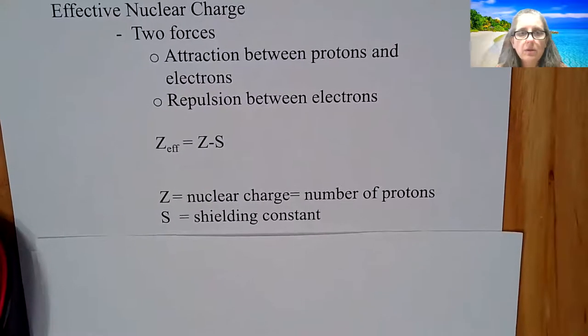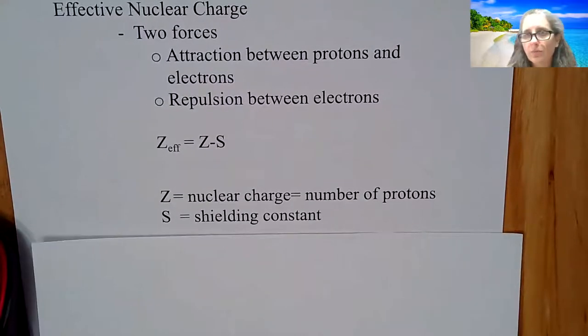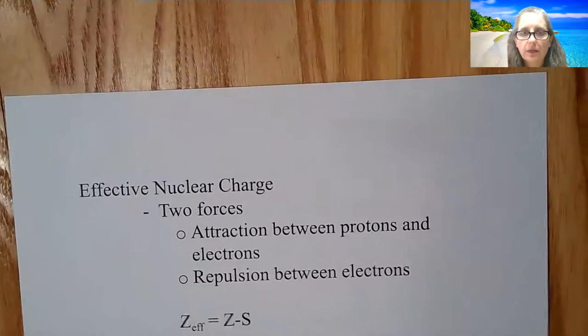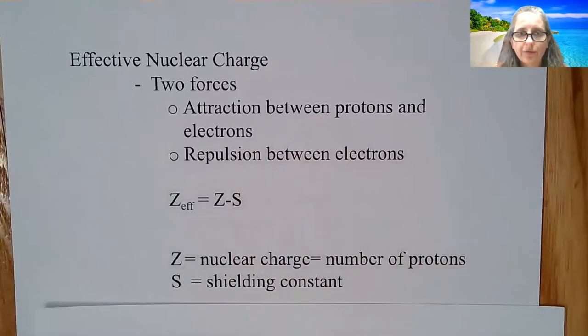So Z is, of course, the nuclear charge or the number of protons that we're dealing with in the nucleus, and S is what we call the shielding constant. So again, the shielding constant is going to be more important discussion here going forward.